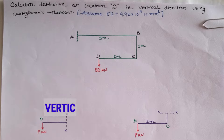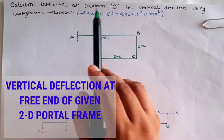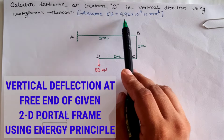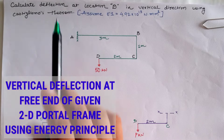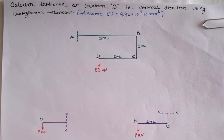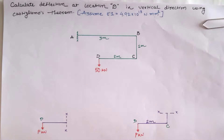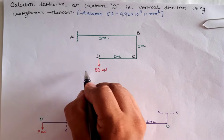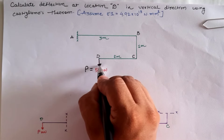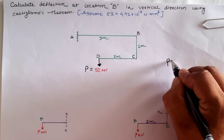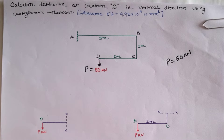Hello friends, today we are going to calculate the vertical deflection at location D of a given 2D portal frame. We have the flexural rigidity EI as 4.92 into 10 raised to 13 newton mm squared, and we have to use Castigliano's theorem. First of all, we assume an arbitrary load P at location D, where there is already a 50 kilonewton load in the downward direction, so we take P as 50 kilonewton.